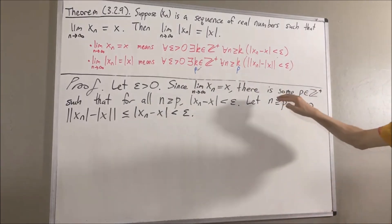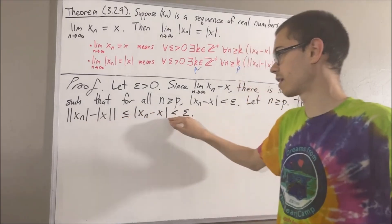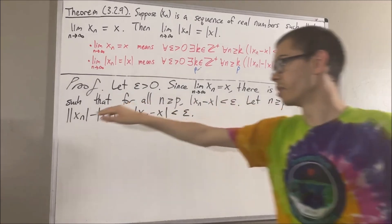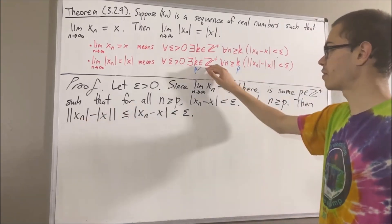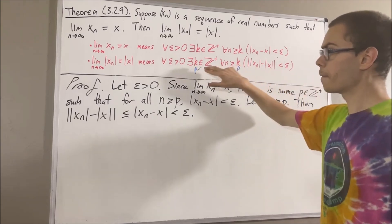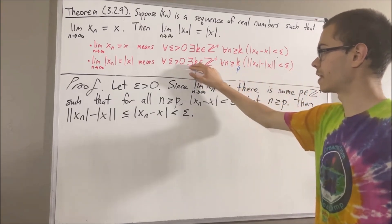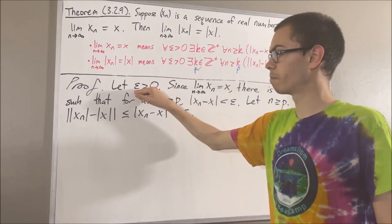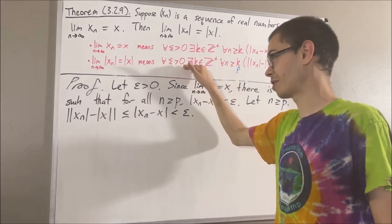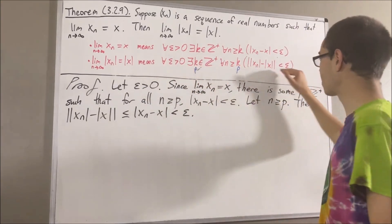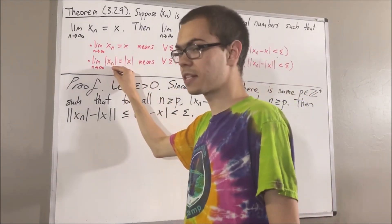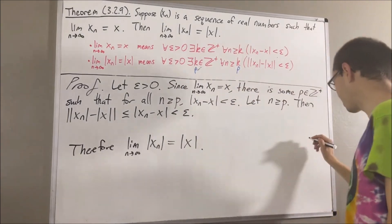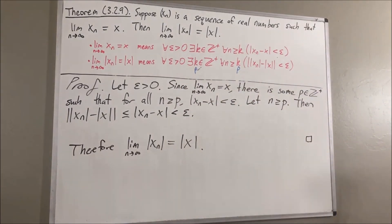So putting this together now, we see that under the assumption n is greater than or equal to p, this quantity is less than epsilon. Since n was arbitrary, this means we have shown for all positive integers n greater than or equal to p, this is less than epsilon. So we have found a positive integer — namely p — which makes this statement turn out true. We proved this was true under the assumption of some arbitrary epsilon greater than zero. Since epsilon was arbitrary, we have shown for all epsilon greater than zero this is true, which means we have proven that the sequence of absolute values of xn converges to the absolute value of x. So this completes the proof.